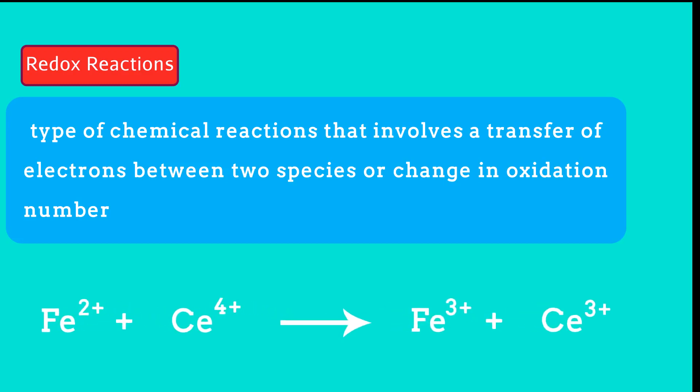For example, in this reaction we noticed that the oxidation number of iron was positive two, then became positive three. It means that there was an increase in oxidation number, in other words, a loss of negative charge so that the oxidation number changed from positive two to positive three. This is known as oxidation.